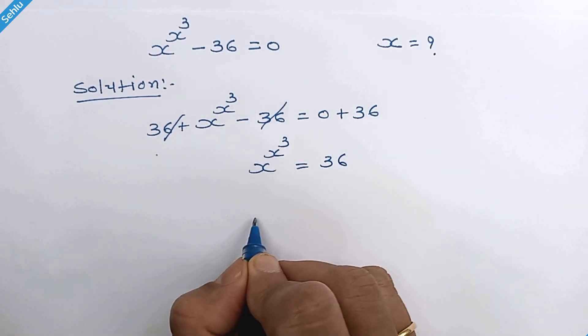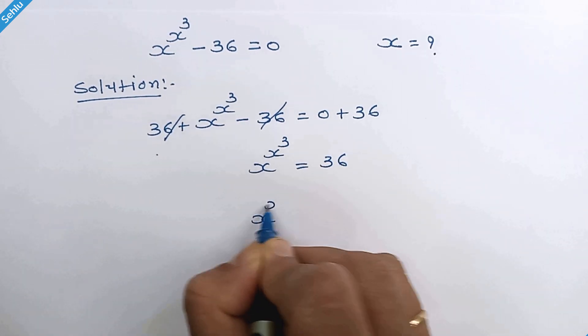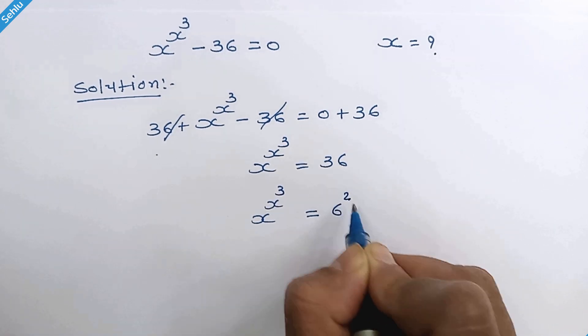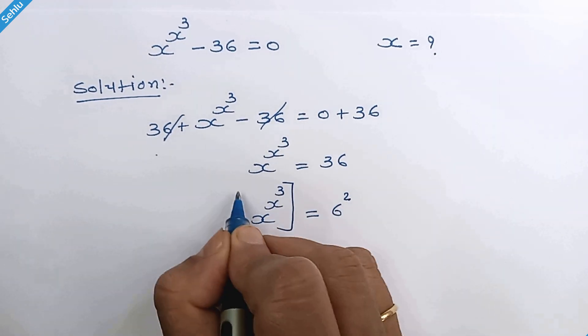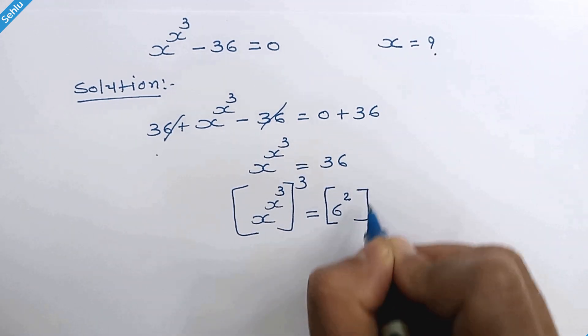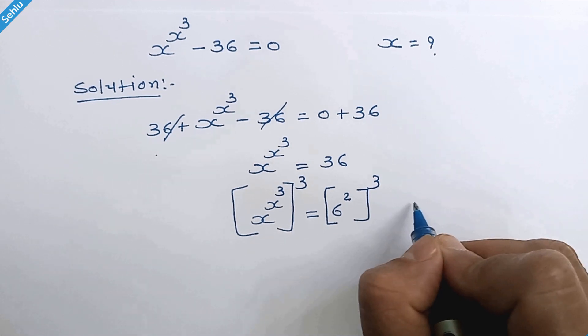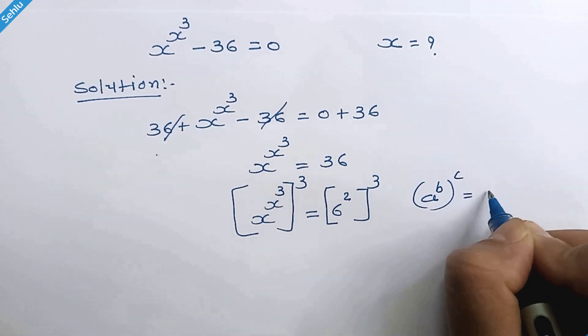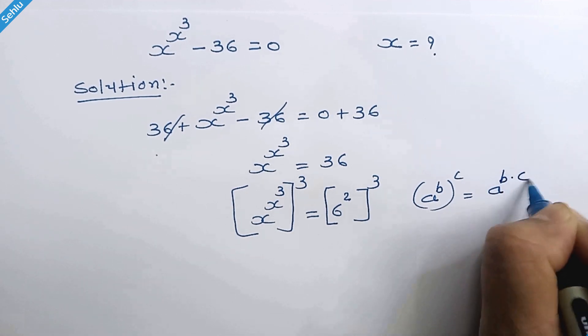36 is 6 square, so we can write it like that, and we will raise both sides to the cube. Now, as per the rule, if we have a raised to b, whole raised to c, then it can be written as a raised to b times c.